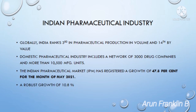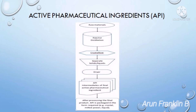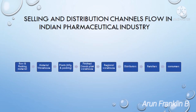than 10,500 manufacturing units. The Indian pharmaceutical industry is classified into: APIs — that is Active Pharmaceutical Ingredients — and formulations; CRAMs — Clinical Research and Manufacturing Services; export and import business; and the biotech industry. Now I will discuss the distribution channel flow in the pharmaceutical industry.